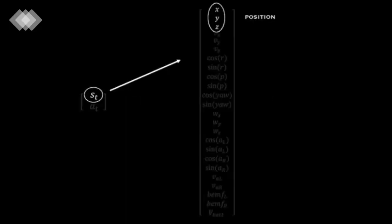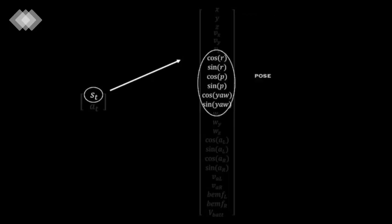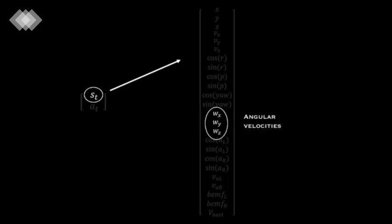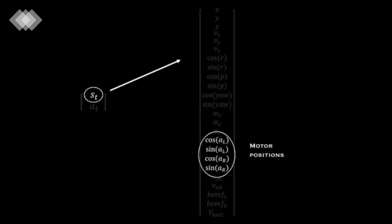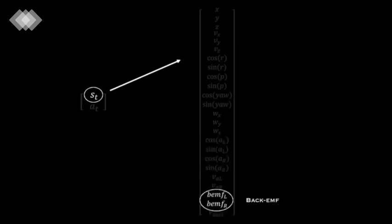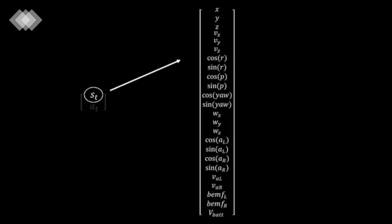We define the state of the Velociroach as follows. It includes the center of mass position from the motion capture system, the center of mass pose from the motion capture system, the angular velocities from the gyroscope on board the IMU, the motor crank positions coming from the magnetic encoders on the motors, the back EMF from the motors, the battery voltage, and the derivatives of some of these values.